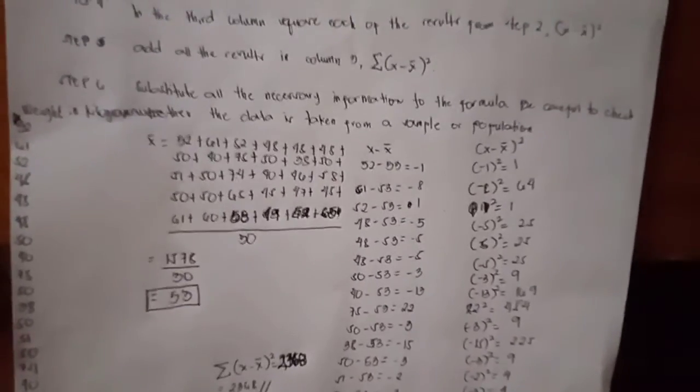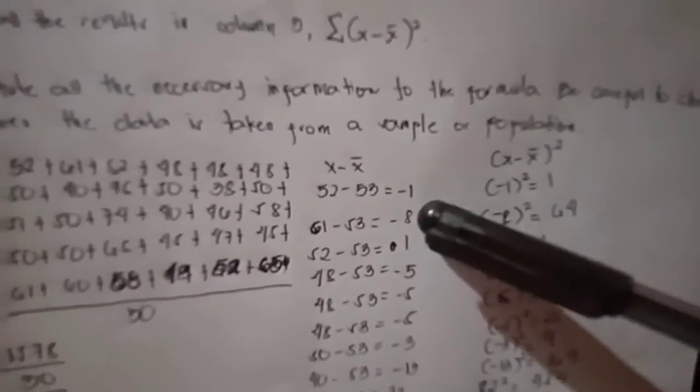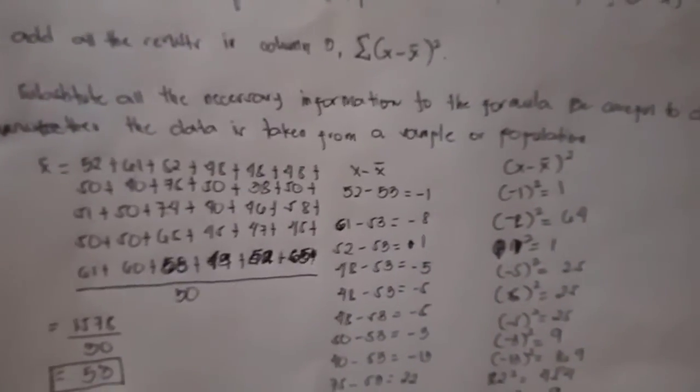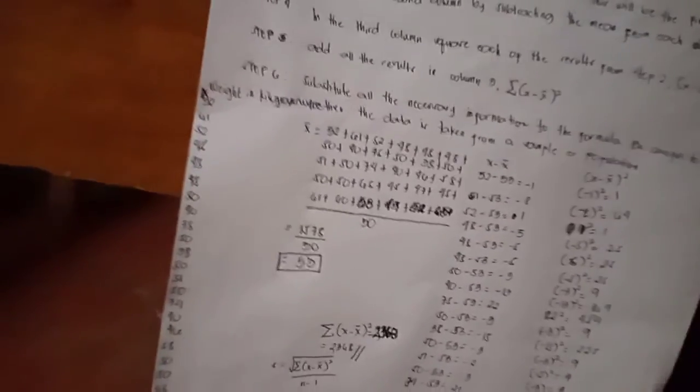For step 4, all we need to do is take the squares of each value here. We have negative 1 squared is equal to 1, and negative 8 squared is equal to 64 and so on.